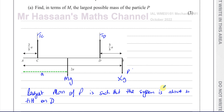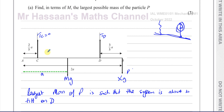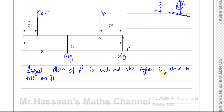So the largest possible mass of P is such that the system is about to tilt on D. At that point, it's still in equilibrium, so clockwise and anticlockwise moments are still equal. At the point where it's just about to tilt on D, the tension in string C is going to become zero — the string becomes loose. So we're looking for the point where the tension in C equals zero but it's still in equilibrium.